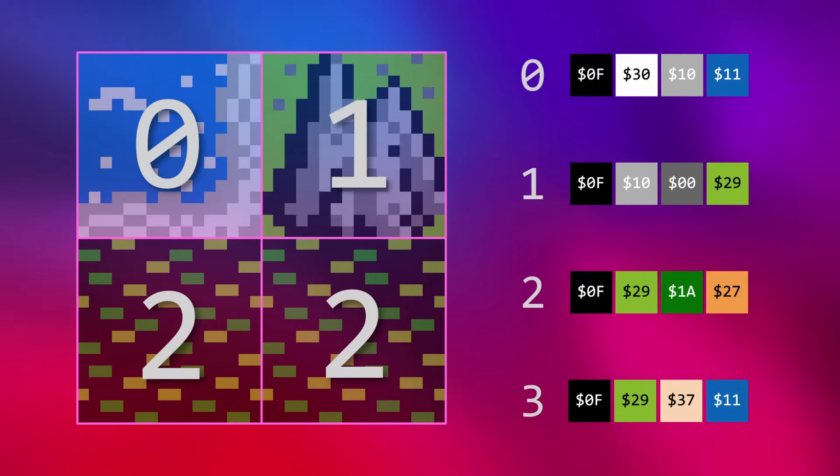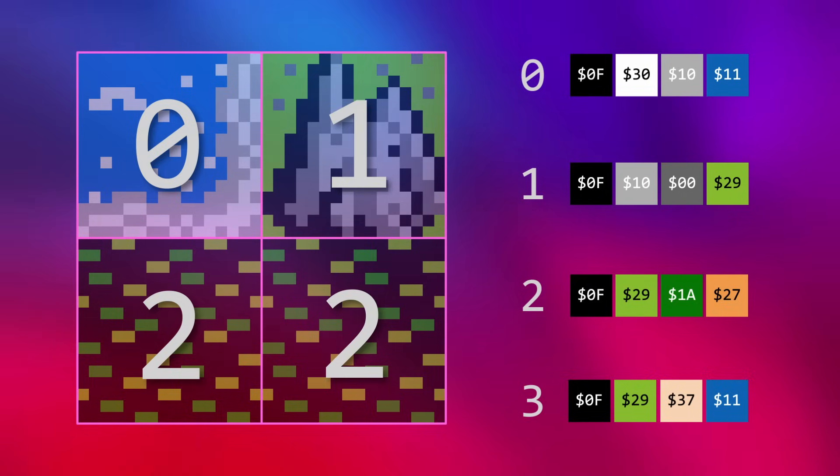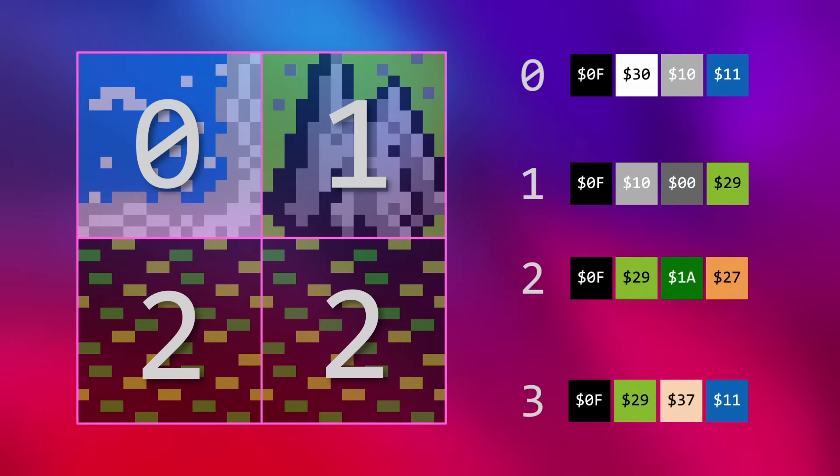When set correctly, the nametables and attribute tables are used in conjunction by the PPU to render the final composite image. While somewhat complicated, when you break them down, both nametables and attribute tables are relatively straightforward. With the background graphics explained, let's move on to the final piece of the NES graphics puzzle — the foreground sprites.